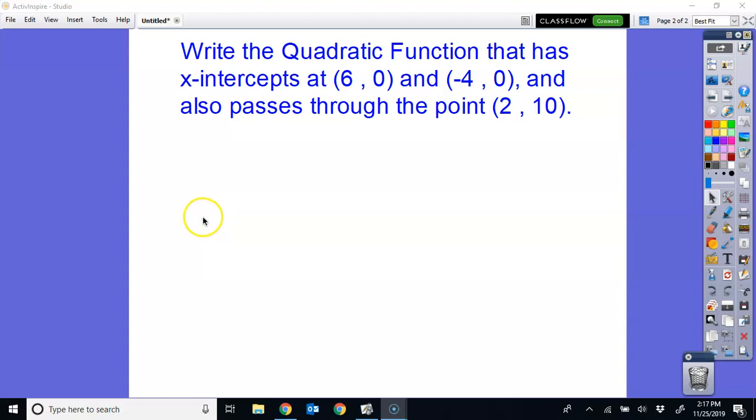Now we're going to take a look at writing a quadratic function again, but this time when we are given x-intercepts. This particular problem says write the quadratic function that has x-intercepts at (6, 0) and (-4, 0), and also passes through the point (2, 10).